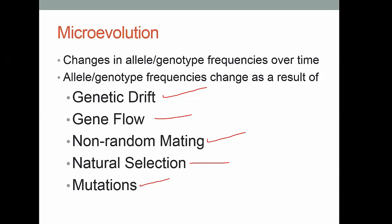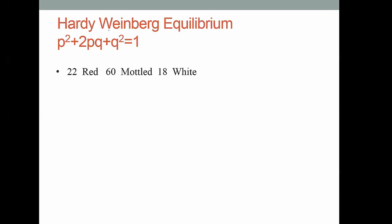Now, how do we put all this together to see if evolution is happening in a population? Well, we use the Hardy-Weinberg equilibrium, which is shown up here: p squared plus 2pq plus q squared equals 1. p is going to stand for the percent or the frequency of one of the alleles, and q will stand for the frequency of the other allele.